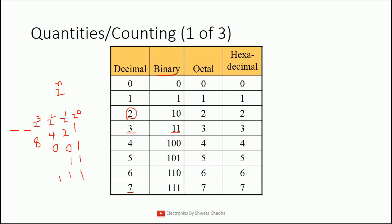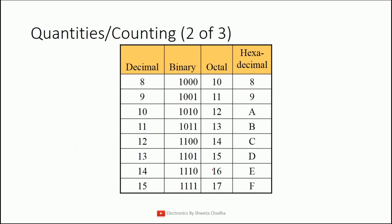Now let us talk about the octal number system. In octal as well, from 0 to 7, all the symbols are allowed. Similarly, in the hexadecimal number system, 0 to 7 all the values are allowed. Now, continuing from decimal 8: by using the 8421 method, you can write down the binary equivalent value. For example, how will you write 9? 8 plus 1 equals 9, hence the binary value will be 1001.